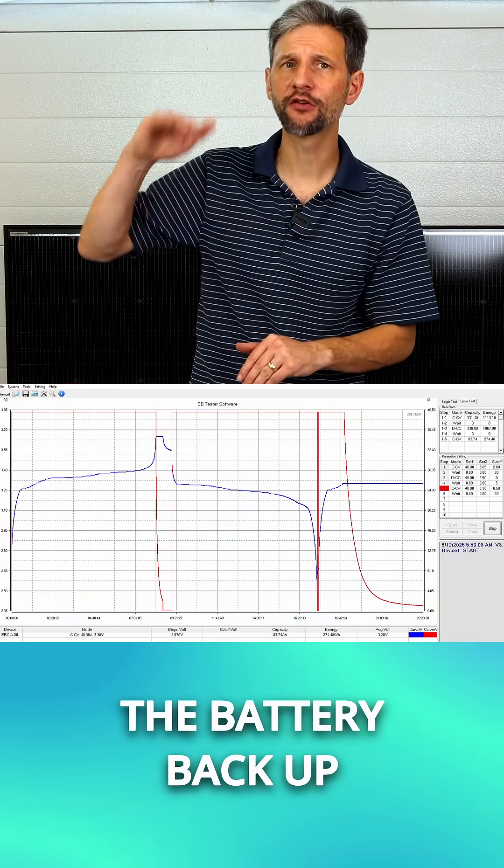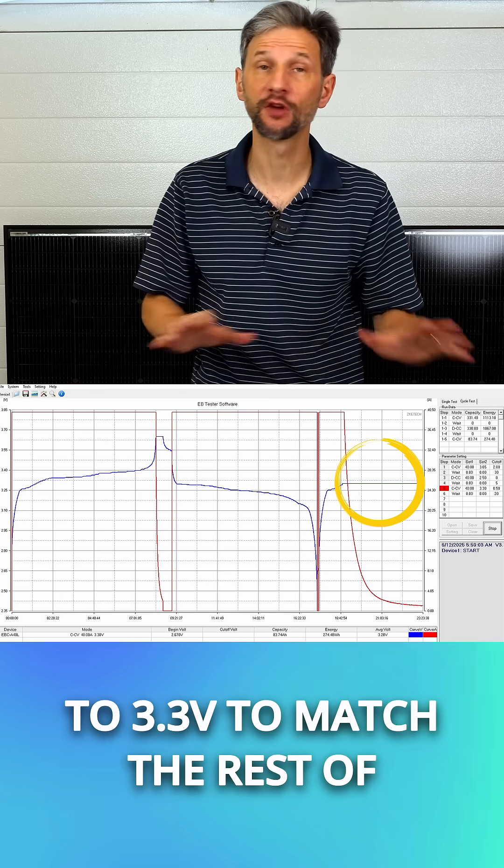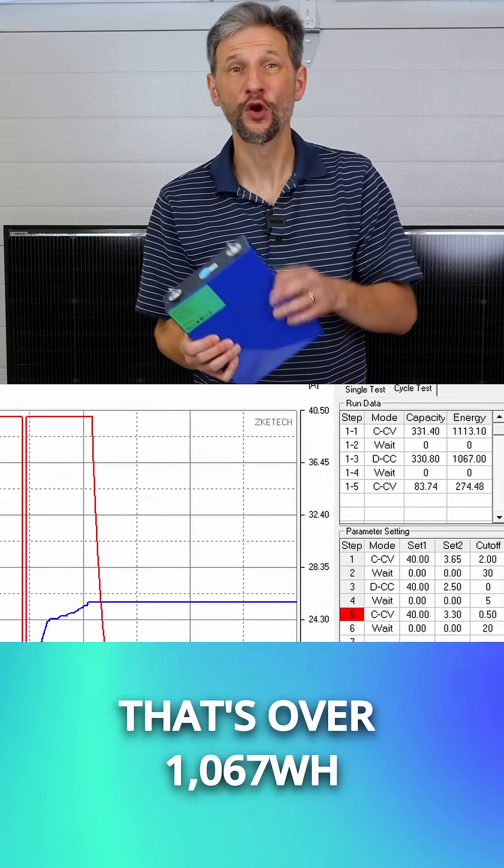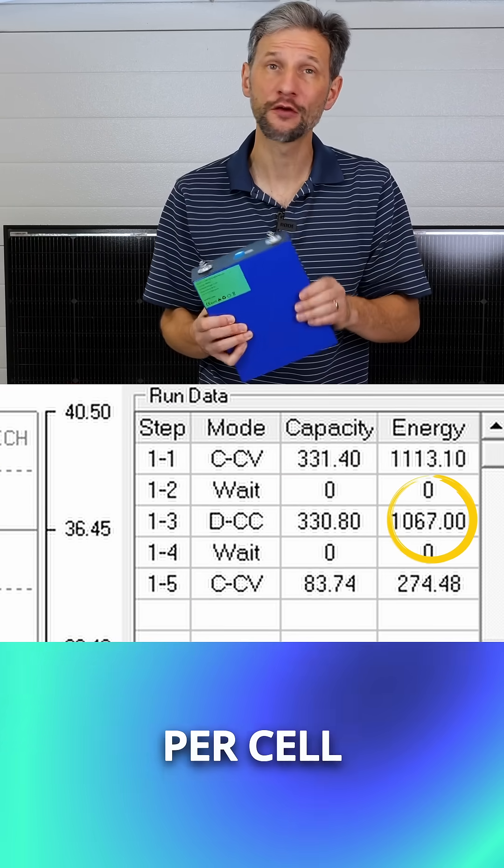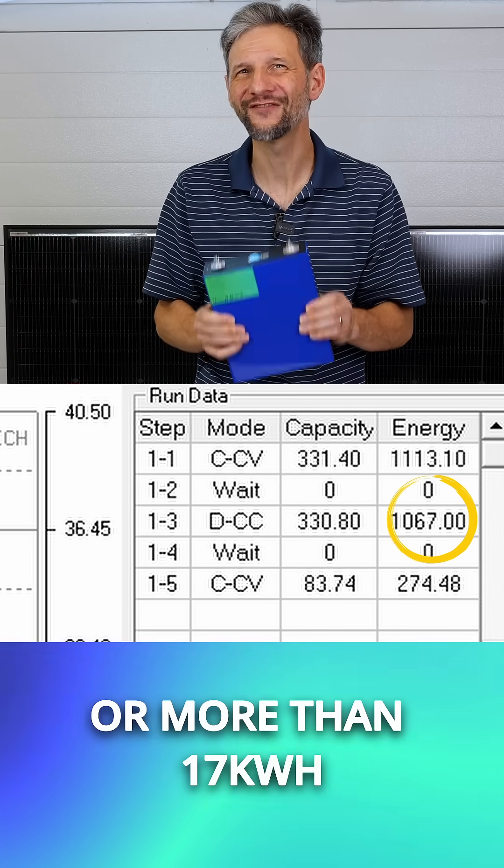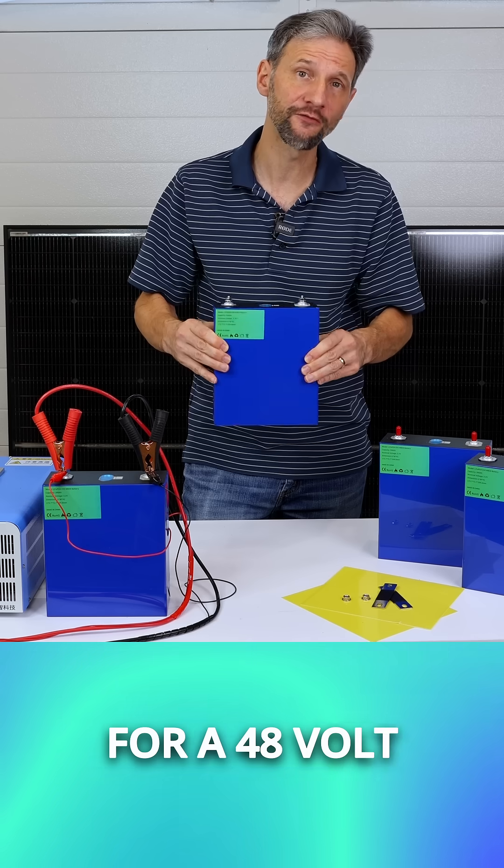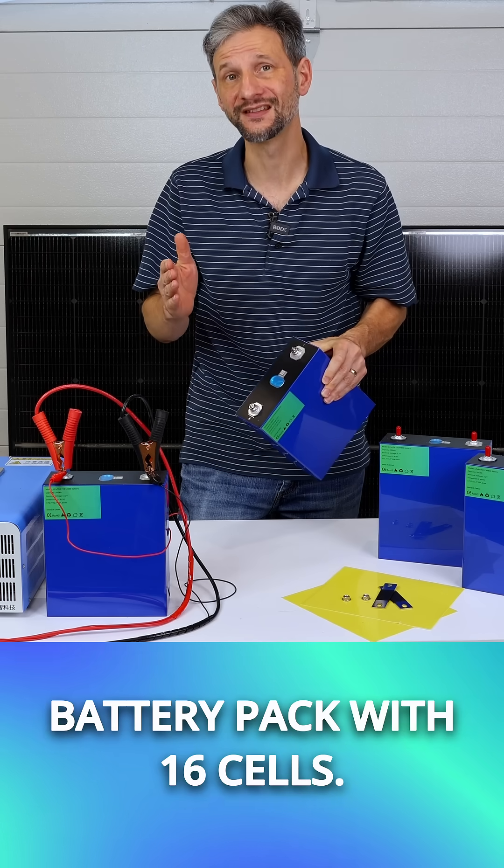After the capacity test, I charged the battery back up to 3.3 volts to match the rest of the cells for assembly. That's over 1,067 watt hours per cell or more than 17 kilowatt hours for a 48 volt battery pack with 16 cells.